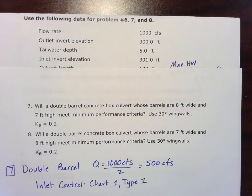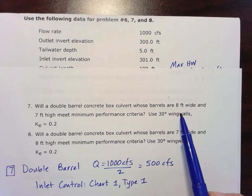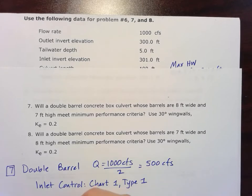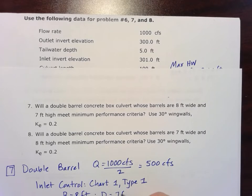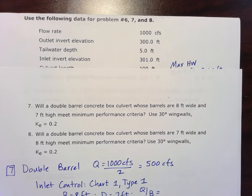So we'll go ahead and find our information here. We're told that the barrels are 8 feet wide, and for this Chart 1, our width is the B dimension. So B is equal to 8 feet. We're told that it's 7 feet high. That's our height of the box, so that's our D dimension is 7 feet.